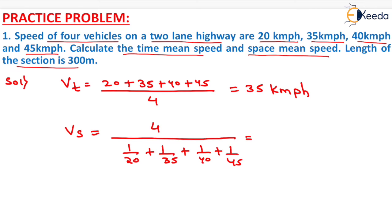We have to solve this: 1/20 plus 1/35 plus 1/40 plus 1/45. On solving this, the denominator comes out as 0.125.